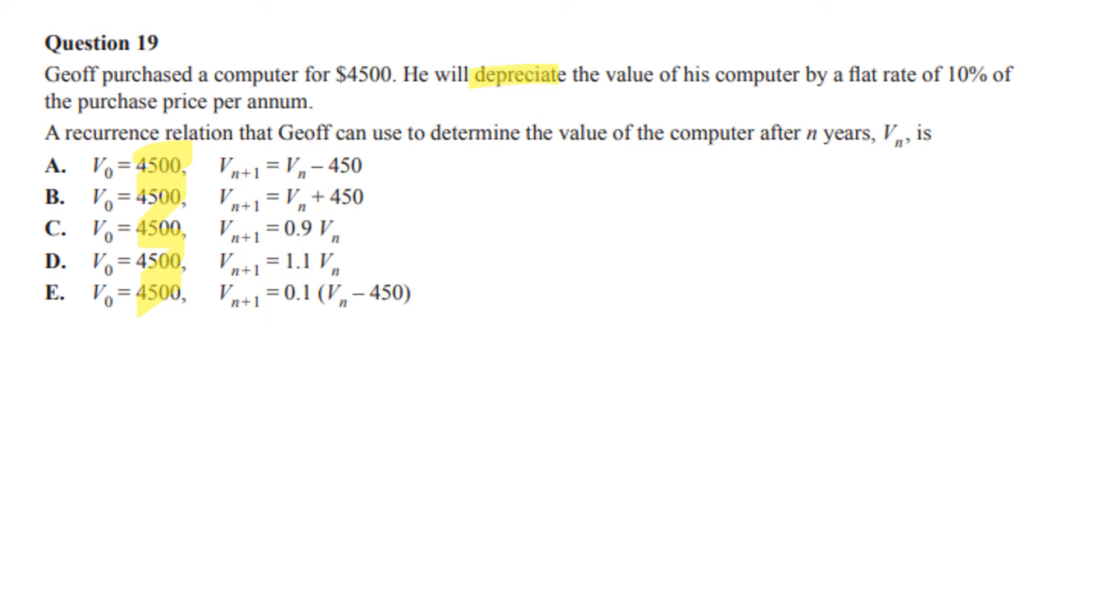We need to look at the fact that it's depreciation, flat rate 10%. Flat rate means you're taking off a certain amount each time, so it's not multiplying by a decimal. A lot of people made that mistake and chose C, but C would be correct if it was reducing balance depreciation.